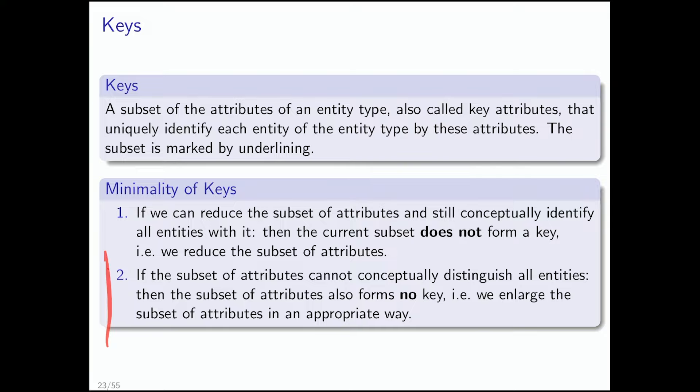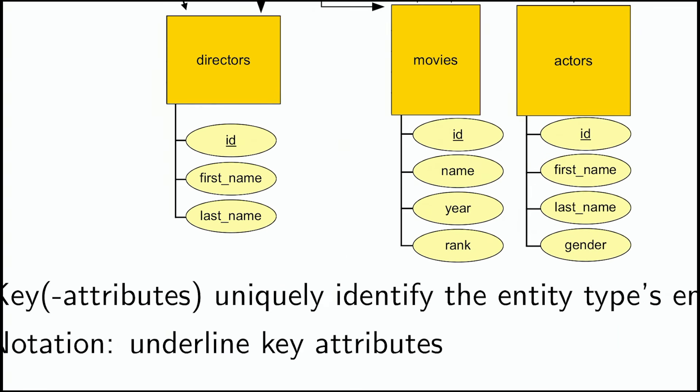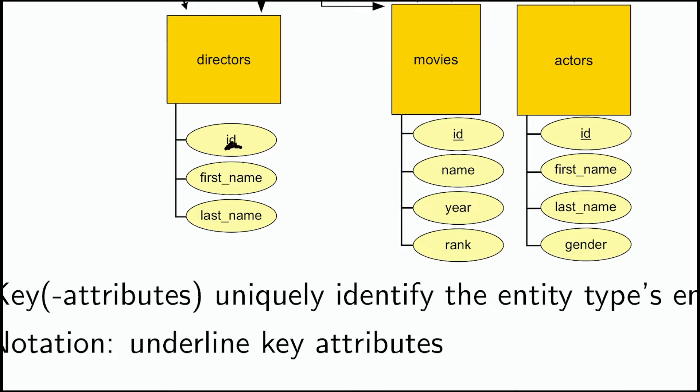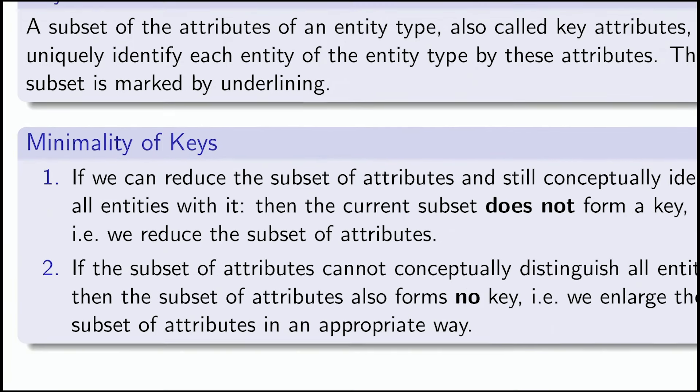Second rule: if the subset of attributes cannot conceptually distinguish all entities, then that subset also forms no key — you have to enlarge it. For example, if only 'first name' is underlined as the key, I cannot represent multiple entities with the same first name. It's impossible because this is a set — it must be unique. So every time there are persons involved in your data, you have to use an ID. No way around that.